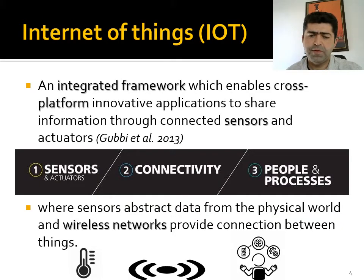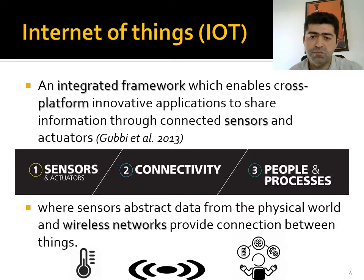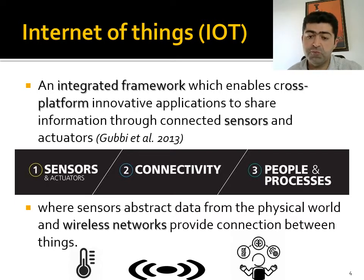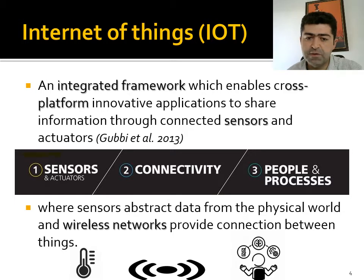The Internet of Things is defined as an integrated framework that enables cross-platform innovative applications to share information through connected sensors. These sensors abstract data from the physical world, and wireless sensor networks provide connection between these things. A very simple layering is seen, where sensors and actuators are connected to the end users and end processes.